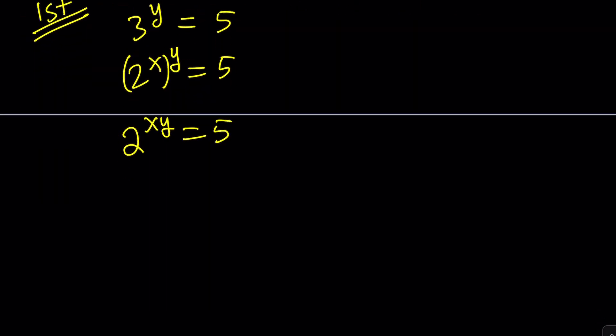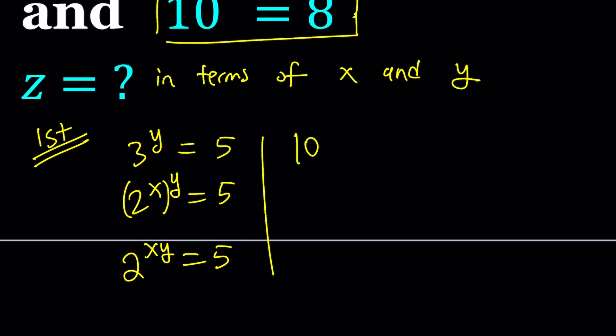So, let's see what we can do. So far, we got 2 to the xy equals 5, and 10 is 2 times 5. So, why don't we use that? 10 to the z equals 8, and 10 is 2 times 5. So, we can basically write this as 2 times 5 to the power z equals 8, and 8 is 2 to the third power. I think it makes sense to write it as a power of 2, because we have a 2 in our expression. And then, use the power of a product, which you can write as 2 to the z times 5 to the z, and then that equals 2 to the third.